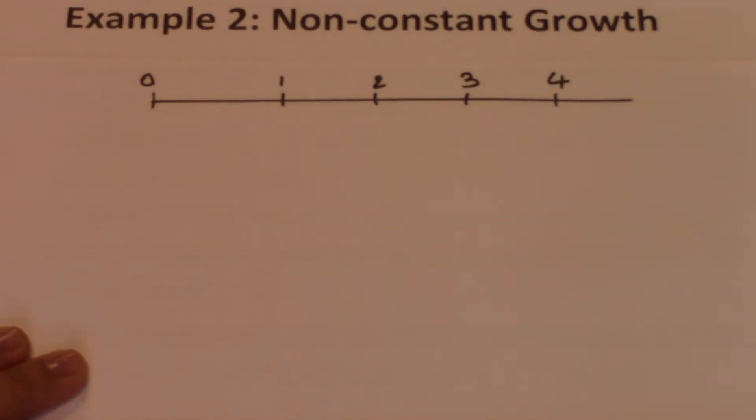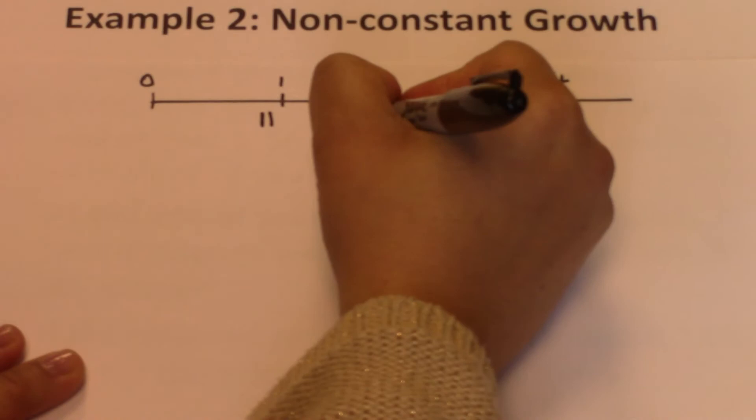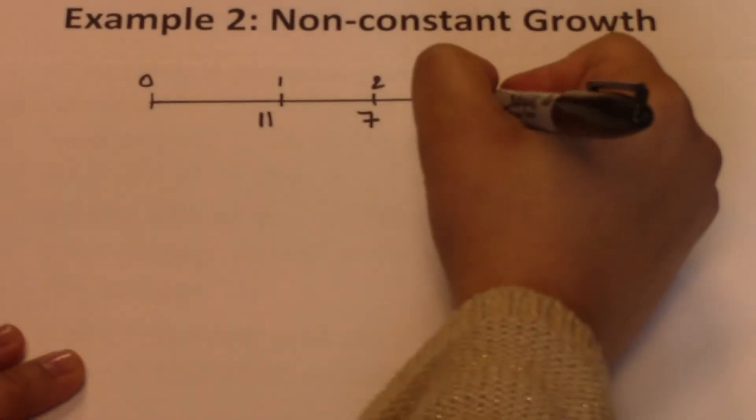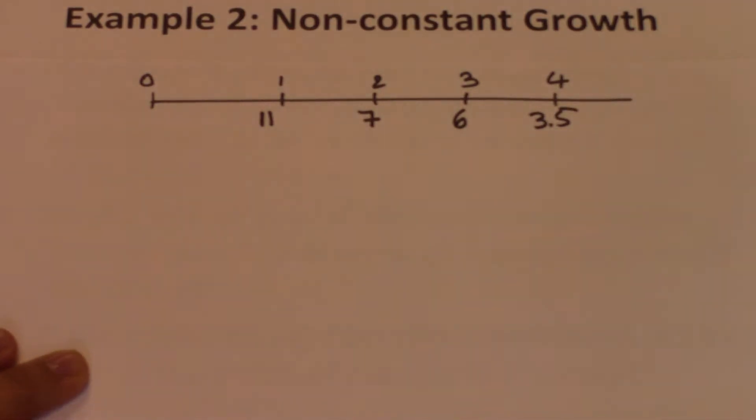The problem tells us that the company is going to pay $11 at the end of year 1, $7 at the end of year 2, $6 at the end of year 3, and $3.5 at the end of year 4. After year 4, the dividends are going to grow constantly over time.